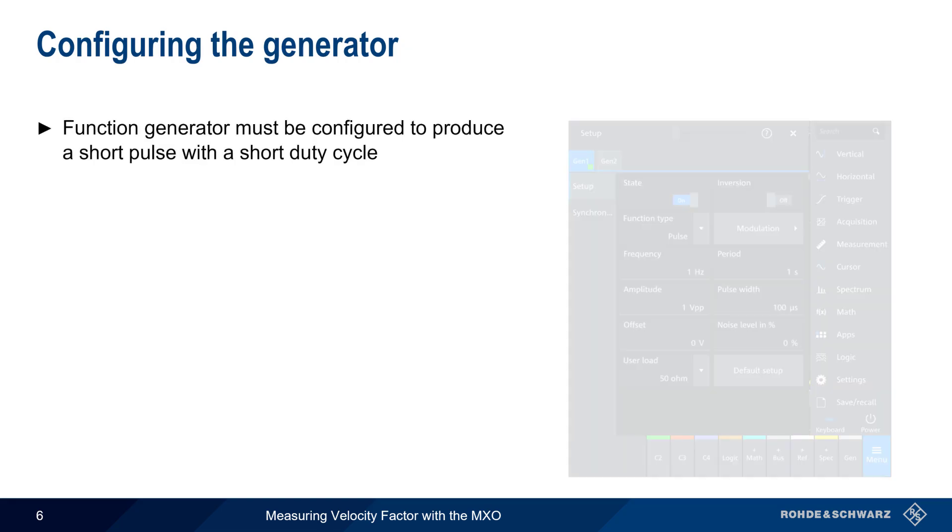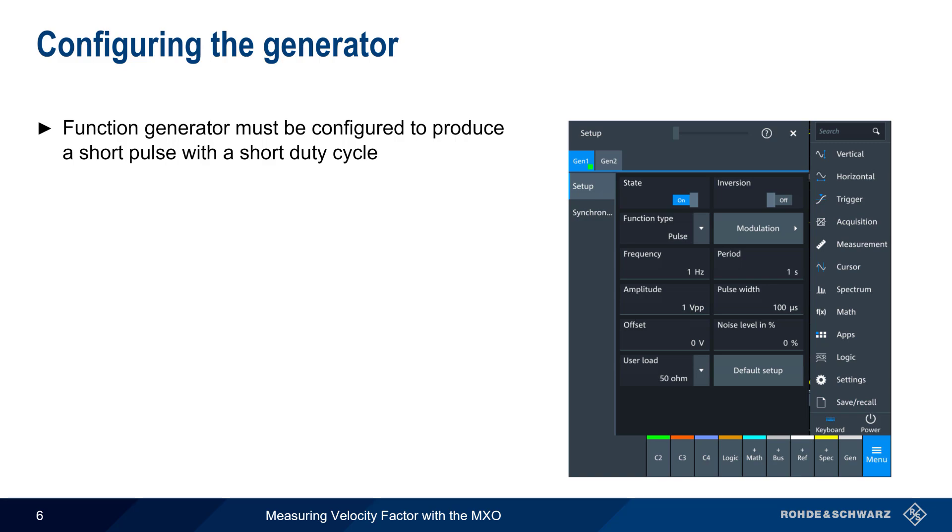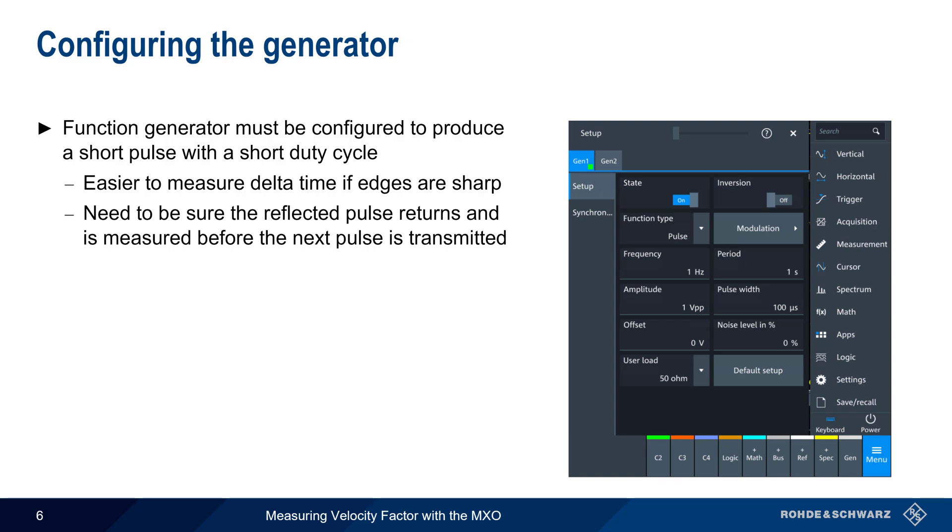The first step in measuring velocity factor with the MXO is configuring the function generator to produce a short pulse with a short duty cycle. A short pulse, or rather a pulse with a fast rise time, makes it easier to measure the time between the transmitted and reflected pulse. And a short duty cycle helps to ensure that the reflected pulse returns and is measured before the next pulse is transmitted.